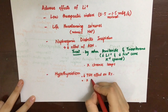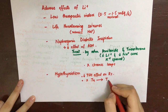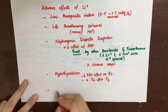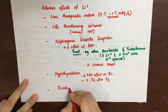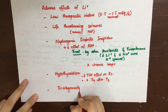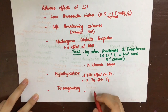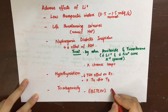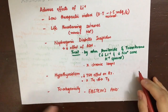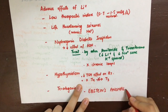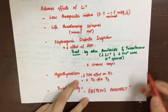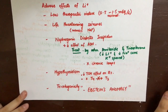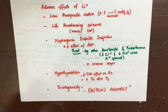A teratogenic effect of lithium therapy is Ebstein's anomaly, a congenital heart defect in which the tricuspid valve is malformed and adherent to the posterior wall of the right ventricle. When the right ventricle pumps blood, most of it is regurgitated back into the right atrium, resulting in an abnormally large right atrium and a smaller right ventricle. This can also lead to heart failure. That covers lithium and the drugs used in bipolar disorder.